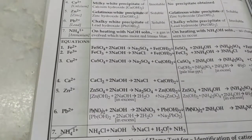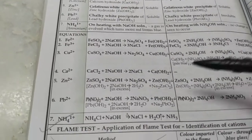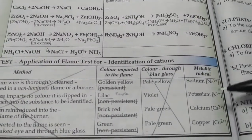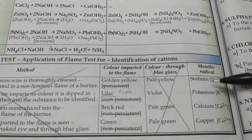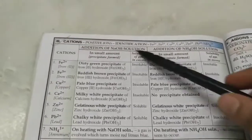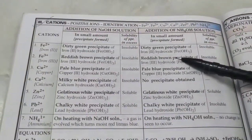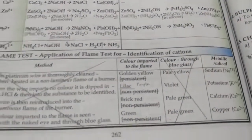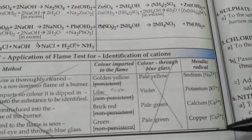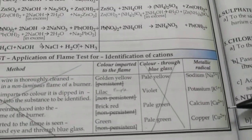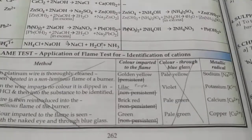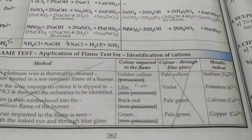Flame tests are also useful to identify certain cations. Sodium and potassium do not give precipitates with alkalis, so flame tests are essential: sodium gives a golden yellow flame, potassium gives a lilac or purple flame, calcium gives a brick red flame, and copper gives a green flame.